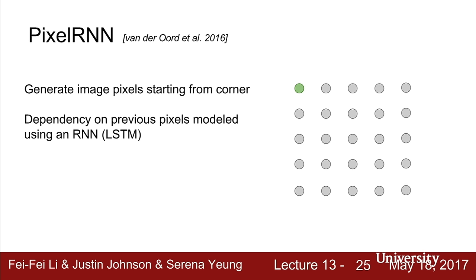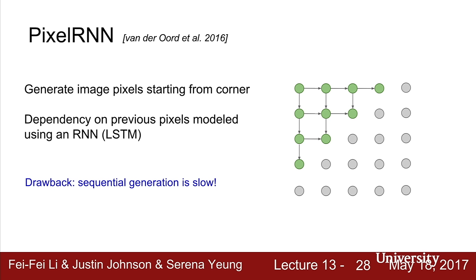Pixel RNN, proposed in 2016, generates pixels starting from the upper left corner of the image and sequentially generates pixels based on connections shown by arrows in the grid. Each pixel's dependency on previous pixels is modeled using an RNN, specifically an LSTM. This works well, but the drawback is that it is sequential generation and therefore quite slow.